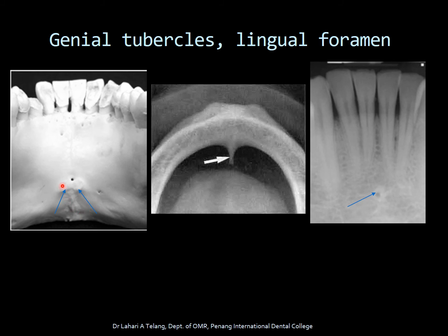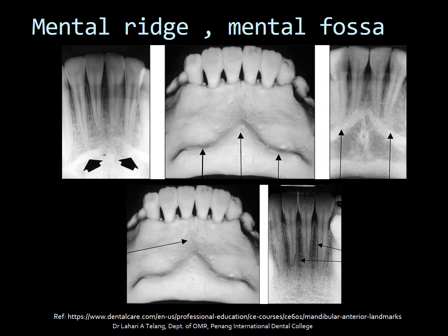This anatomy shows you the lingual foramen and the location of the genial tubercles. The mental ridge is a dense radiopaque structure visible as radio-opaque lines indicating the shape of the bone. The radiolucent area is the mental fossa, seen on this radiograph. You can also see the lingual foramen in this radiograph.